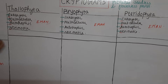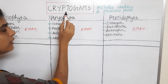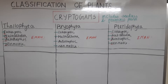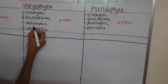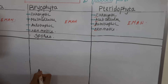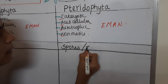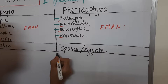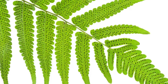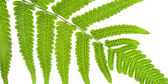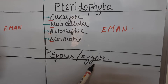Now let's see how reproduction takes place in all three divisions. Thallophyta, Bryophyta, and Pteridophyta belong to cryptogams and are flowerless plants. Reproduction in Thallophyta and Bryophyta takes place by spore formation. Pteridophytes also reproduce asexually by spore formation — the spores are found on the posterior side of the leaves — but sometimes they also reproduce sexually by zygote formation.